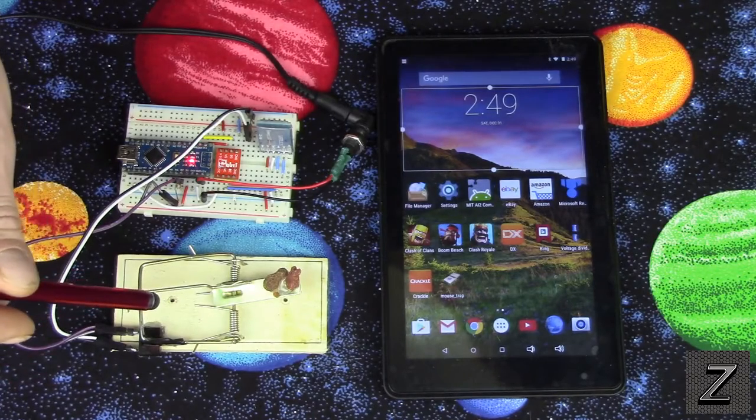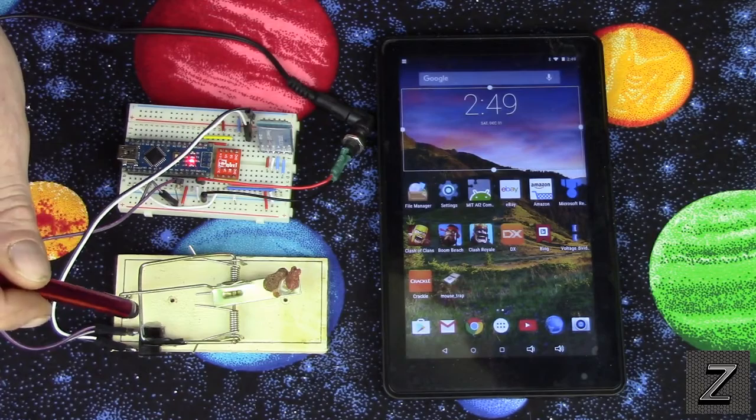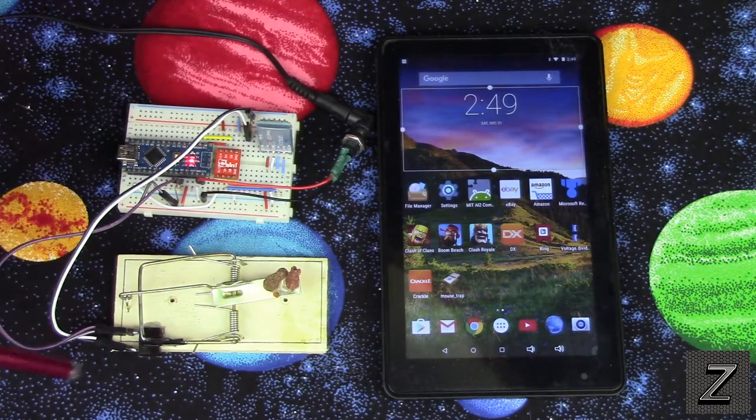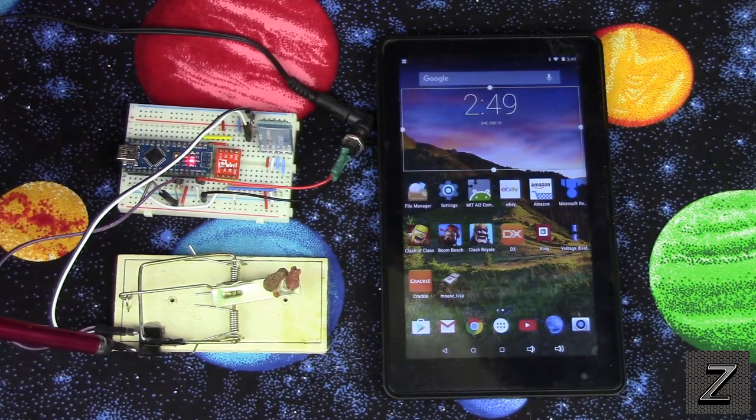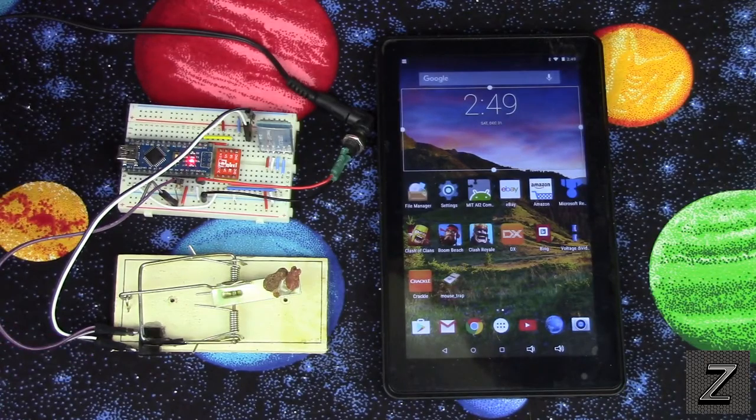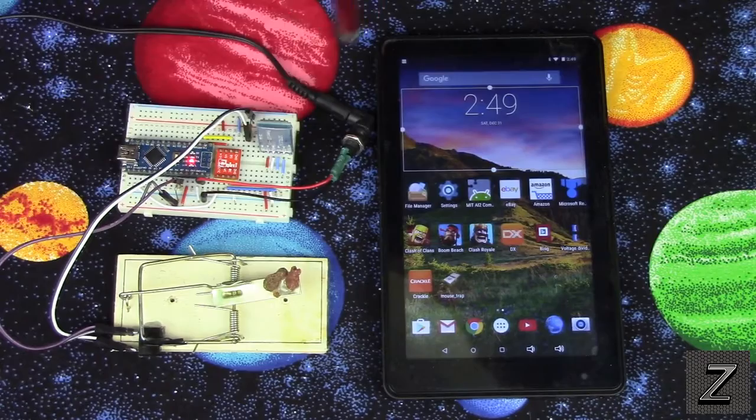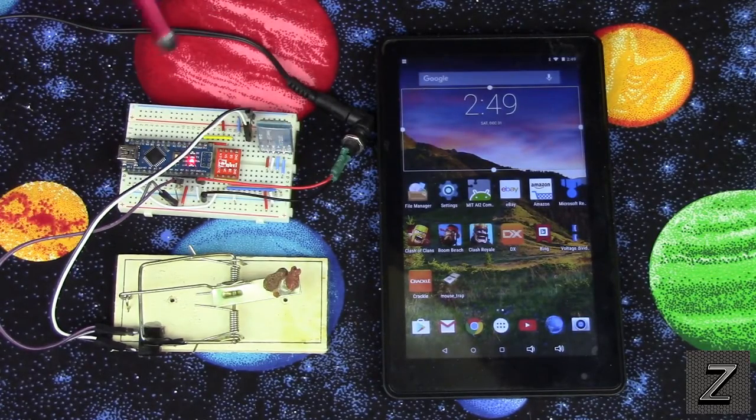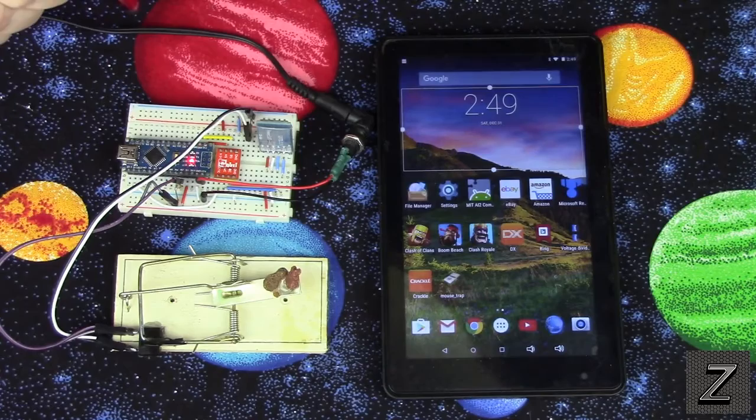Other mice and rats and small animals of that nature will drag this off if it's not weighted down with anything and then you're going to have to go searching for your trap. So what I'll do is I'll demonstrate it working first and then we'll go through the circuit and I'll show you how it works.